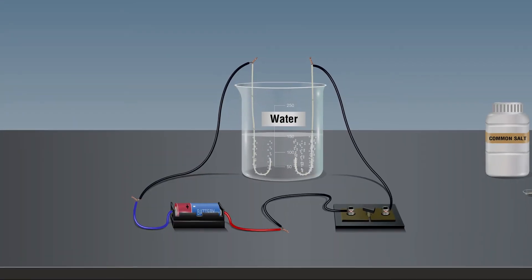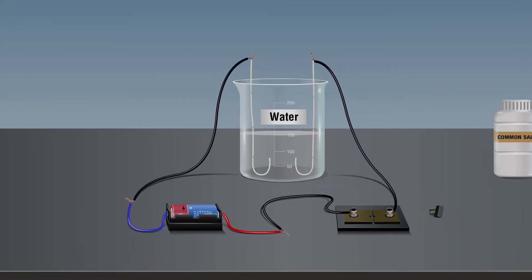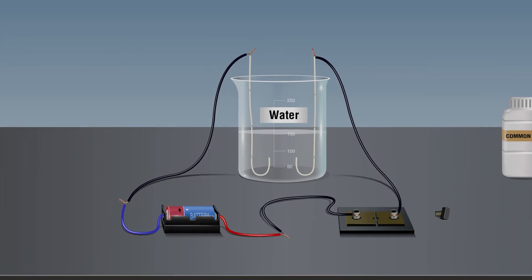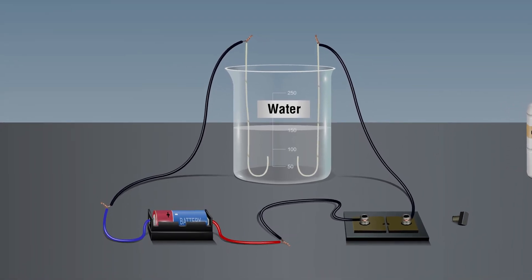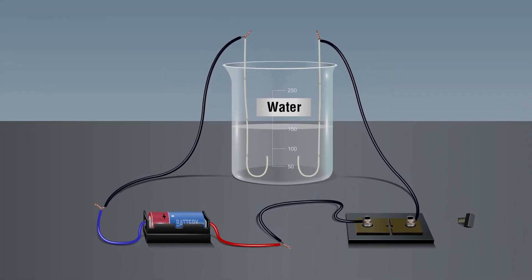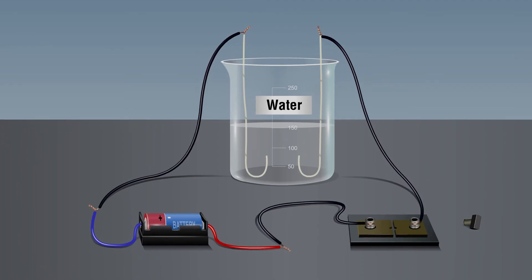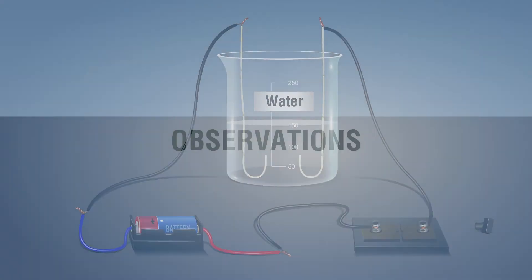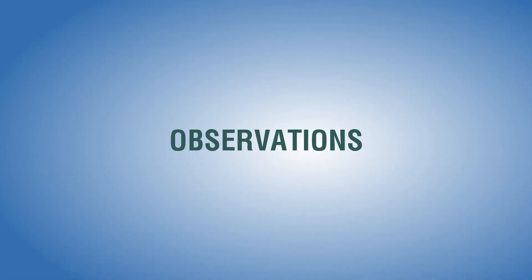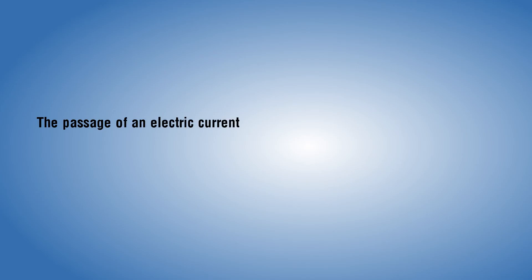Now remove the key from the plug. Do you still observe the bubbles on the electrodes? No bubble formation takes place. Observation: the passage of an electric current through water causes a chemical reaction.